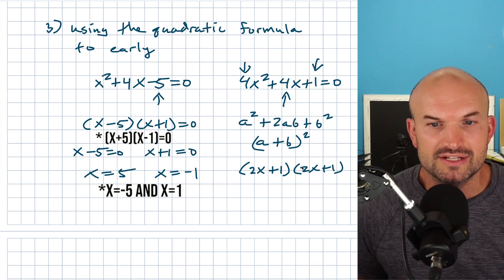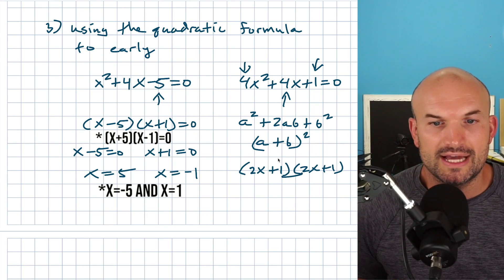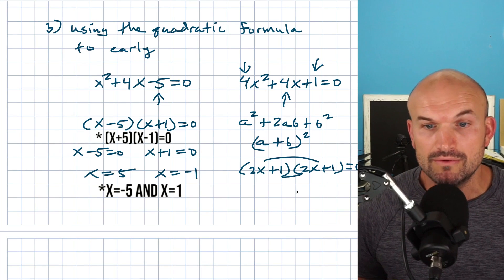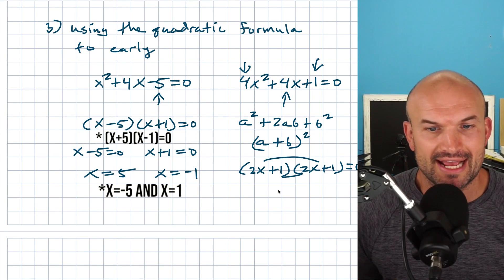You can see two X times two X is four X squared, right? One times one is one and the inner and the outer terms add to four X. So you can see this works again. I totally forgot. This is equal to zero, right? So actually if we wanted to actually go ahead and solve this,